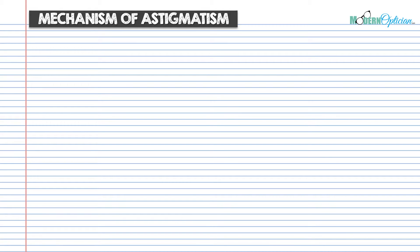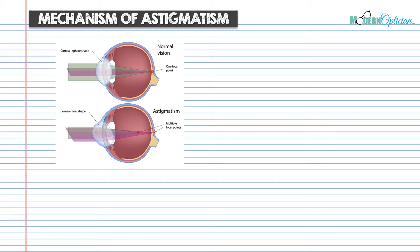Now that we know a little about astigmatism — different curvatures on the cornea or lens — let's look at the mechanism. If we look at a schematic of normal vision, we see that a spherical cornea refracts parallel rays of light so that the vertical and horizontal planes are equally refracted, coming to a single point focus. Recall from normal vision, myopia, and hyperopia: we were always dealing with a single point focus — on the retina, in front, or behind.